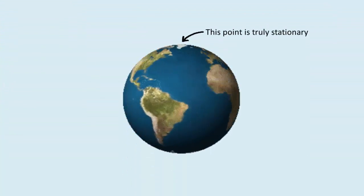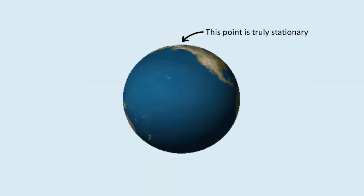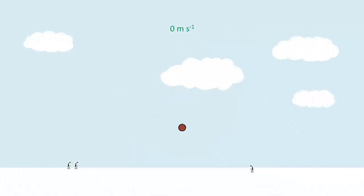If you are at the poles, things that appear stationary are really stationary. A vertical drop is a vertical drop.